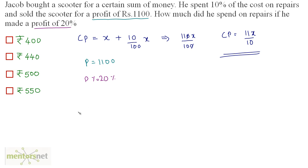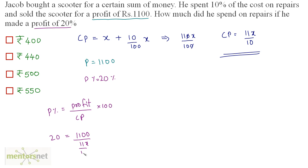We know the formula for profit percent: P% equals profit divided by cost price, times 100. So 20 equals 1100 divided by (11X/10), times 100. Rearranging, 20 times 11X/10 equals 1100 times 100.